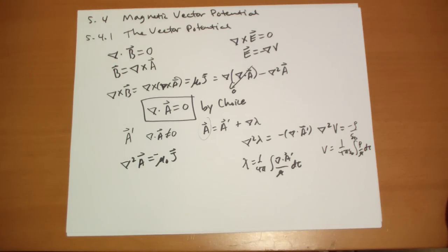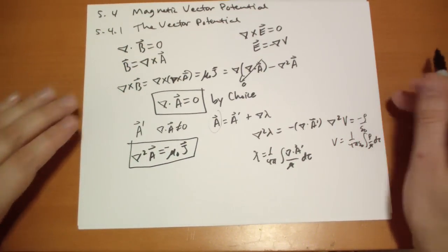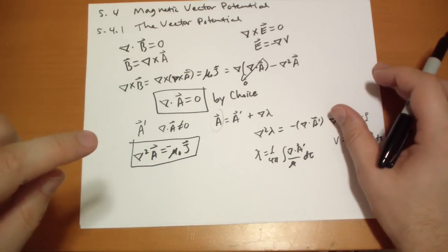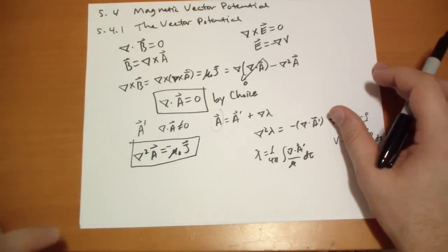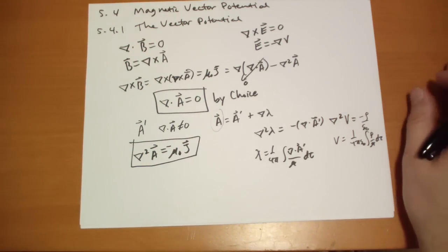This is nothing different than Poisson's equation that we studied so intently with the potential, except for there's three of them. It says the x component of this is a Poisson equation for the x component of the current. And the y component is the same for there, and the z component is the same for over there.